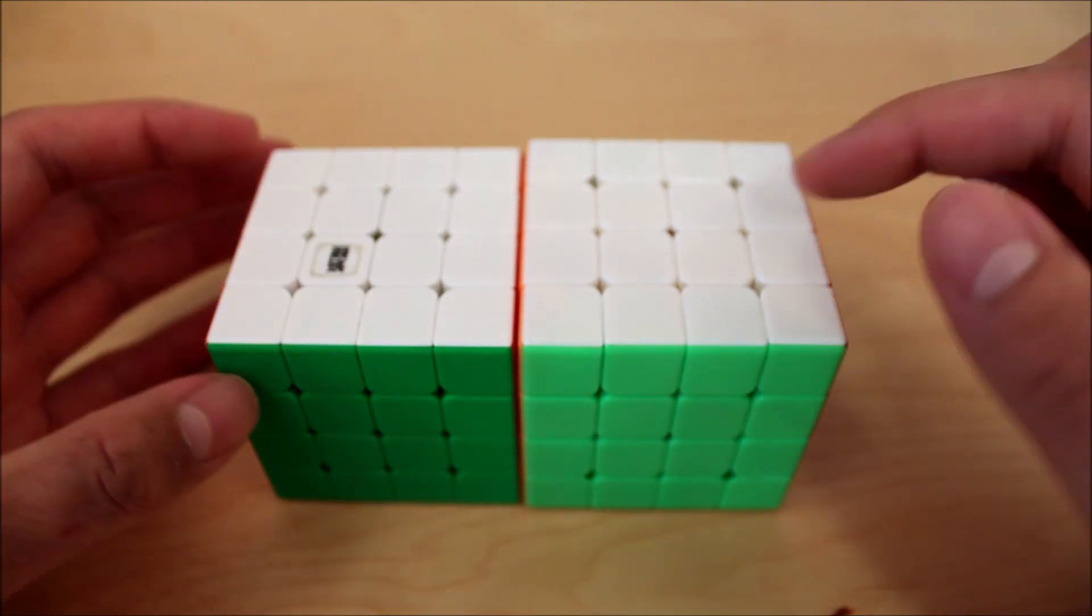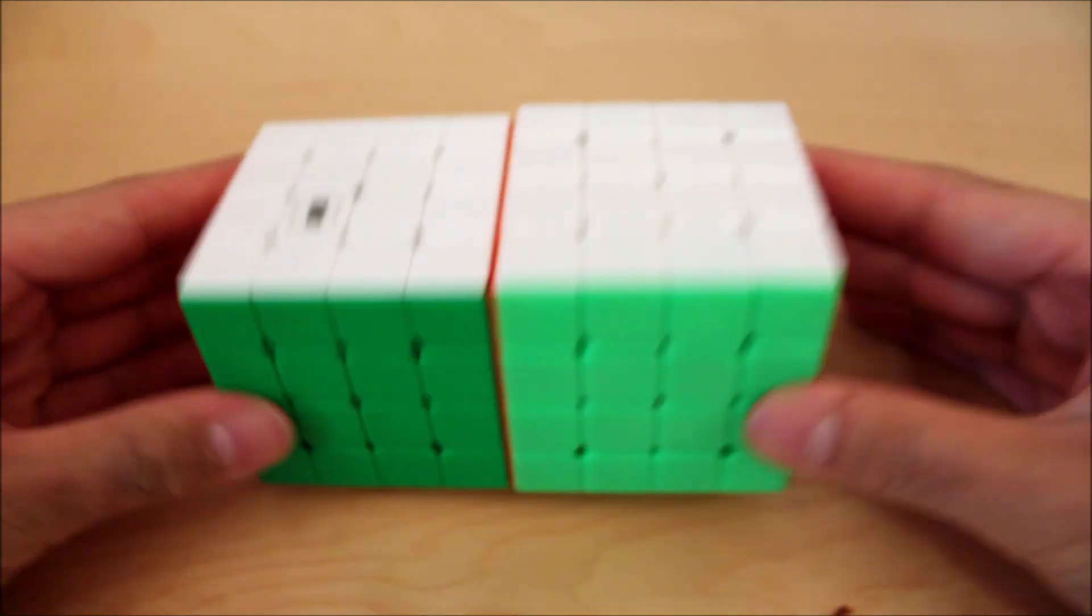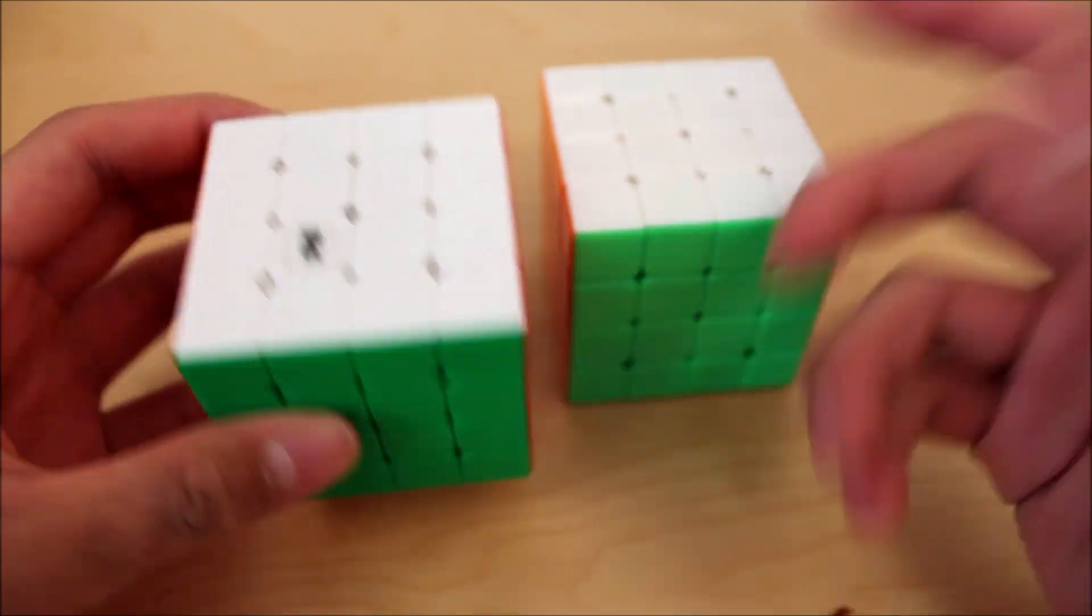So the size difference is pretty apparent. This is around 61mm, this is around 59mm. You can kind of see that. I'll go more into that later in the video, but for now, just know that the WR-M is a bit smaller.